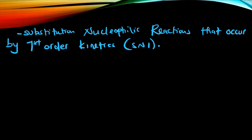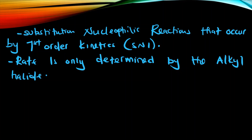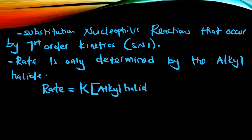The rate of an SN1 reaction is only determined by the substrate — that is, the alkyl halide. The rate is the speed at which the reaction occurs, and the nucleophile plays no role in determining that rate. So the rate is simply the rate constant times the concentration of the alkyl halide. This means if you double the concentration of the alkyl halide the rate goes up, but if you double the concentration of the nucleophile the rate of an SN1 reaction is not affected at all.